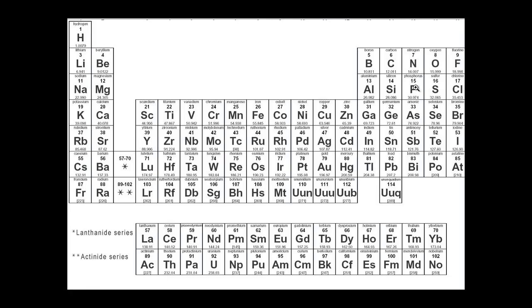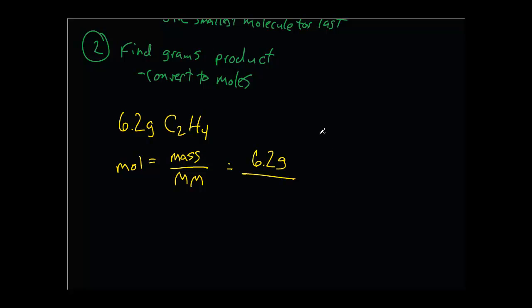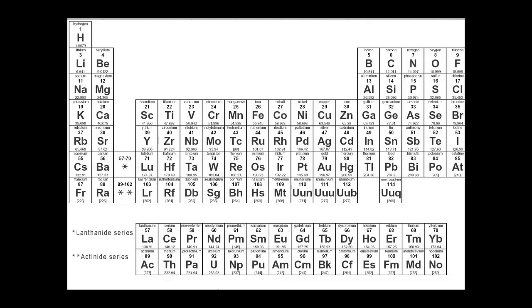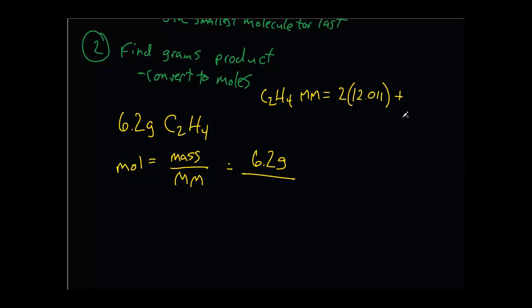Well, it's 12.011 times 2, or 2 times 12.011 plus 4 hydrogens, which is 1.0079 or 4 times 1.0079. Let's add those up and see what we get.